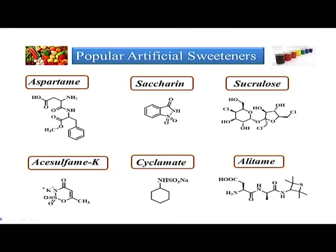We are going to study six basic classes of compounds: aspartame, saccharin, sucralose, acesulfame, cyclamate, and alitame. These are all approved sweeteners in most countries. I will also note, as and when we discuss them, examples of countries where some of these molecules are not used.